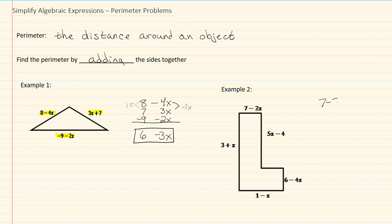So we're going to have 7 minus 2x. My next one is 5x minus 4, so I'm going to put my 5x under my 2. It'll be positive because there wasn't a sign in front of it. That means my negative 4 goes under my 7.